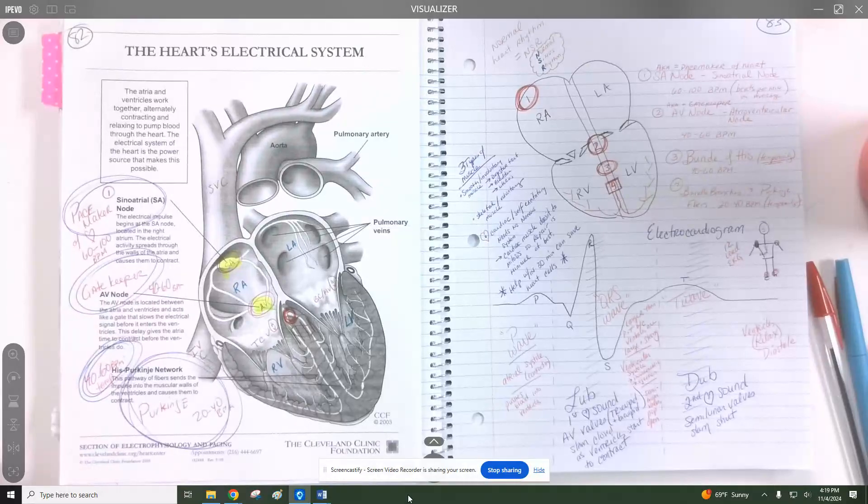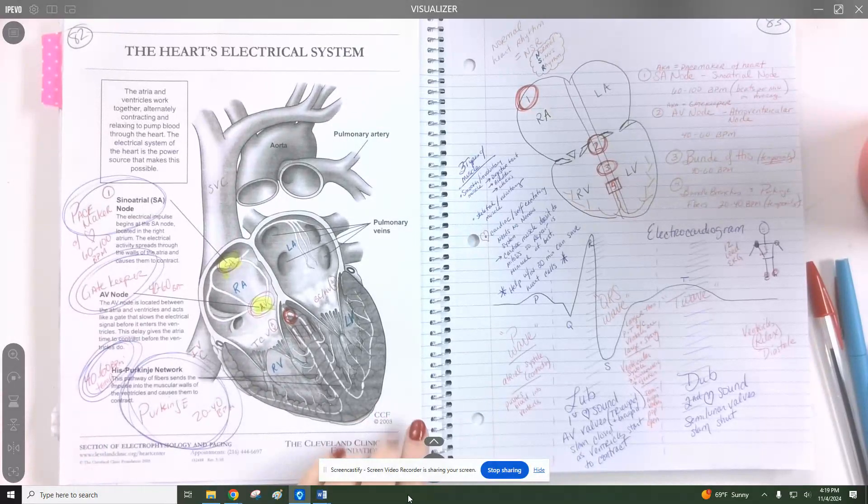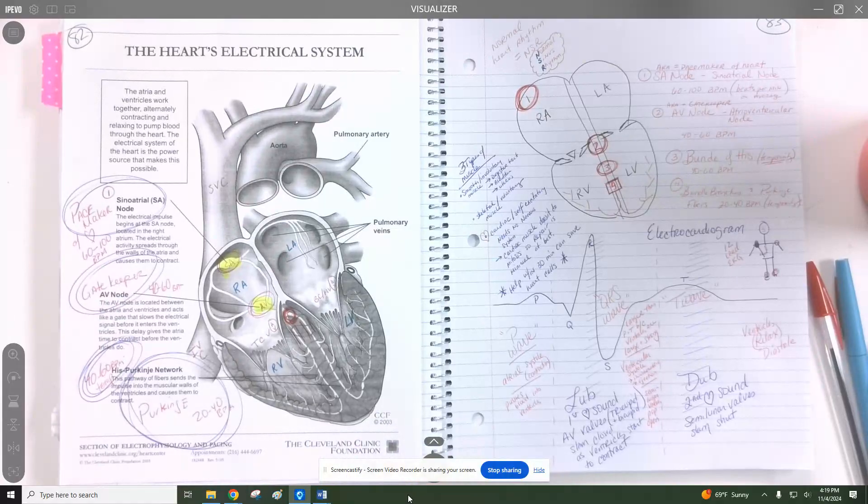And then the Purkinje fibers can also maintain some life-saving impulse triggering. But that's only at a 20 to 40 beats per minute. And again, that's also temporary. So we were just looking at the innervation of the heart.